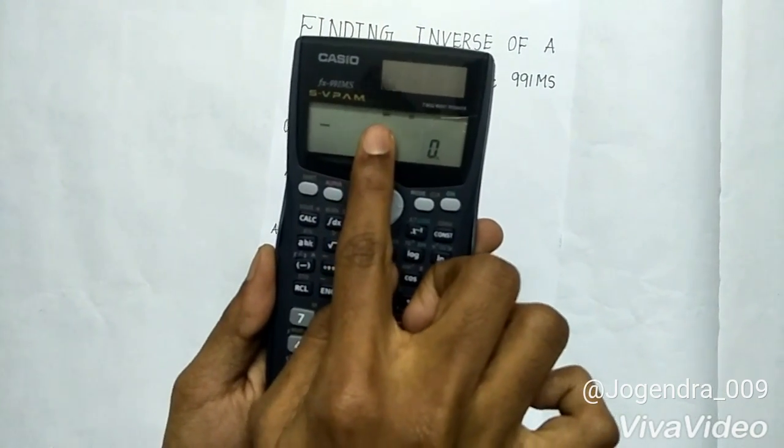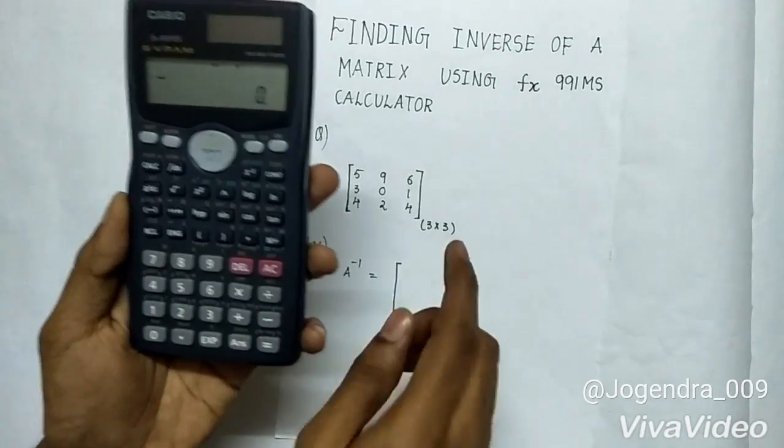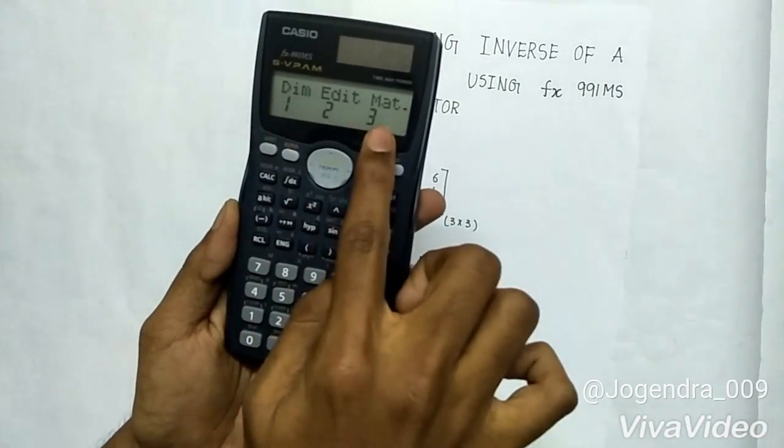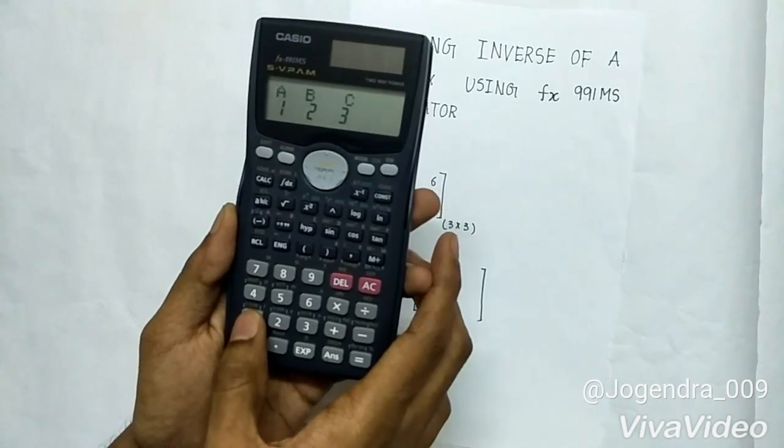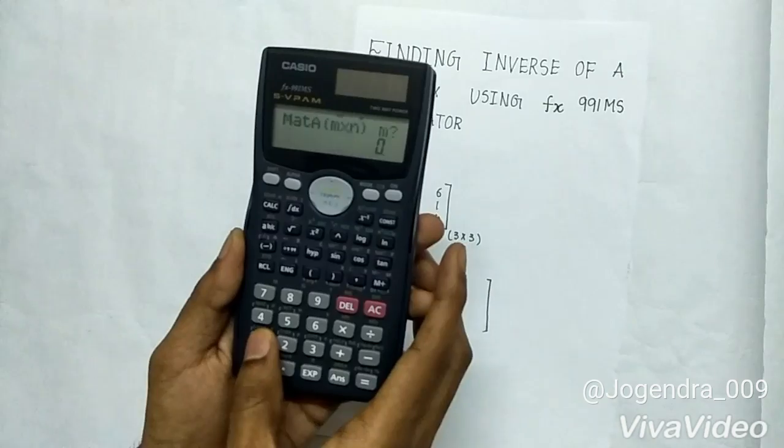So our calculator is set under the mode matrix. Let us give the dimension for the matrix A. Press shift 4. You can see something like this on the screen. Press 1 to dimension the matrix. Select any one of the 3 matrices. I am selecting A, so press 1.